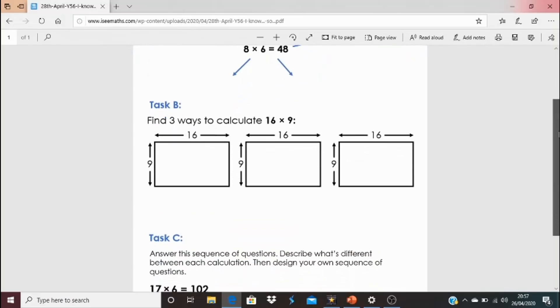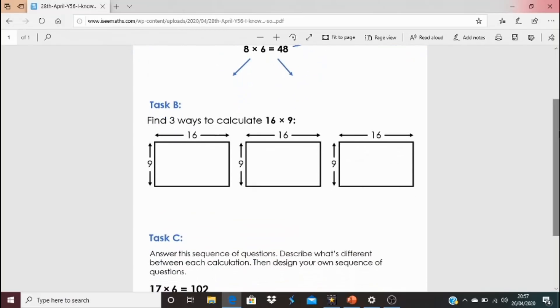Equally, you might have a go at task B. Find 3 ways to calculate 16 times 9. I've given you these 3 rectangles, so you could cut them up to show the different ways that you could split up the 16 and or the 9 to do that calculation. So, again, I wonder which different ways you'll find.